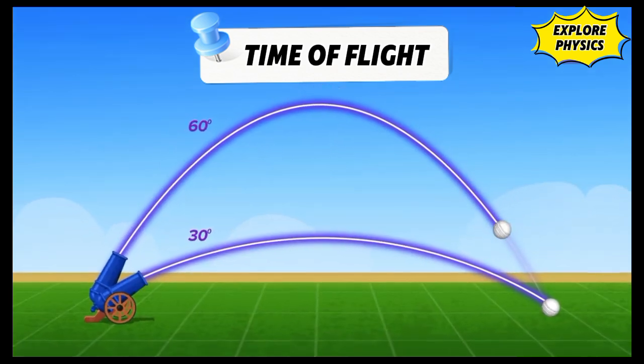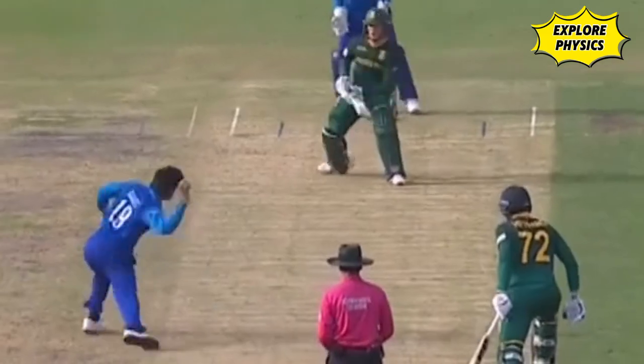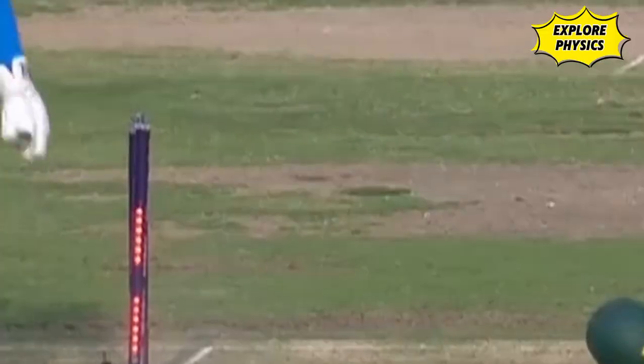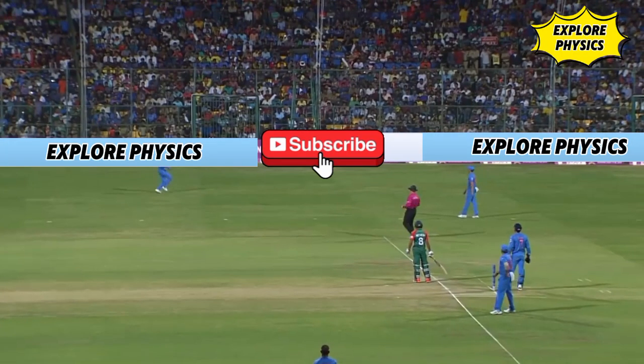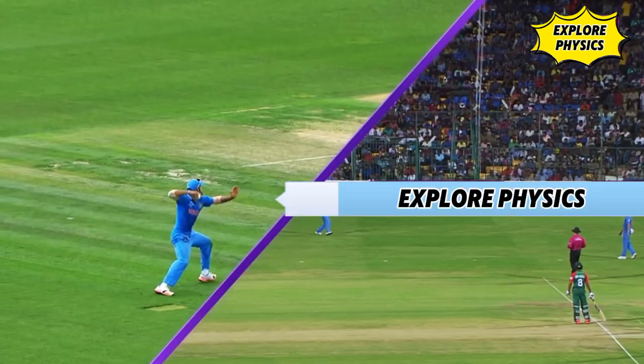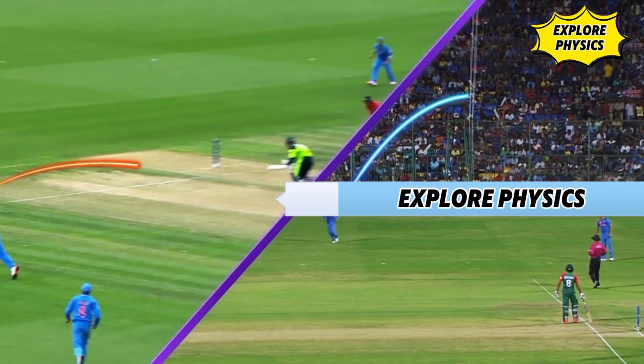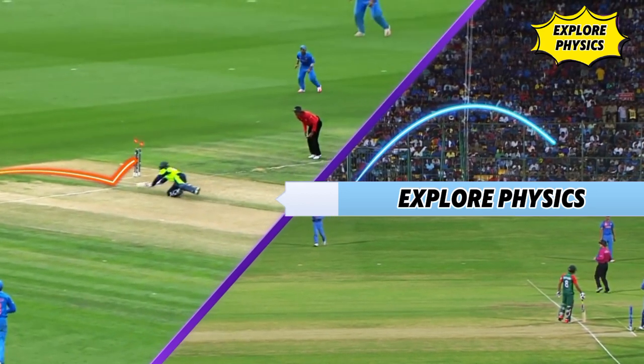So when a batter is running for quick runs, time is of the essence, and the fielder chooses a flatter throw. And when it's a breezy single, the fielder also goes for a casual throw. Why do you think a casual throw is easier than a flatter one? Comment it below and stay tuned with Explore Physics in Cricket.